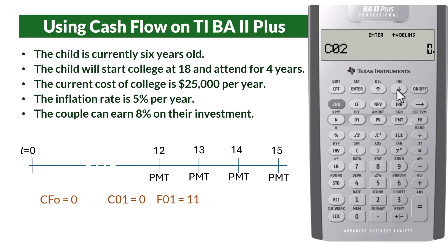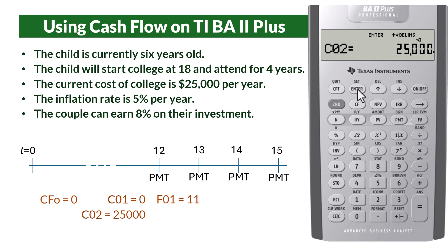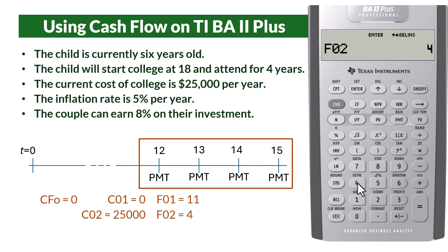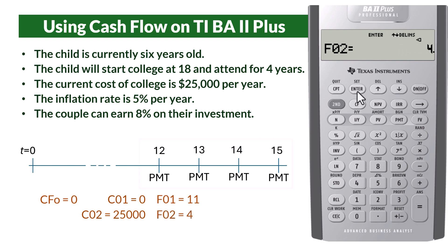FO1 is the frequency of payments for CO1, so we reset that to 11 for the 11 years. Enter and scroll down. Now for CO2, we input 25,000. Enter and scroll down. For FO2, we enter 4 for the 4 years of payments. Enter.